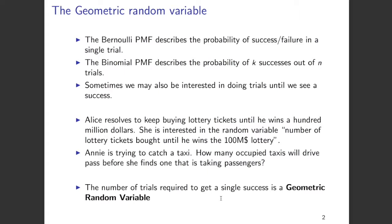The Bernoulli PMF, or the probability mass function, describes a probability of success or failure in a single trial — for example, the toss of a coin. The binomial PMF describes a probability of getting k successes out of n trials. But unlike the binomial or Bernoulli, sometimes we may be interested in doing trials until we see a success.